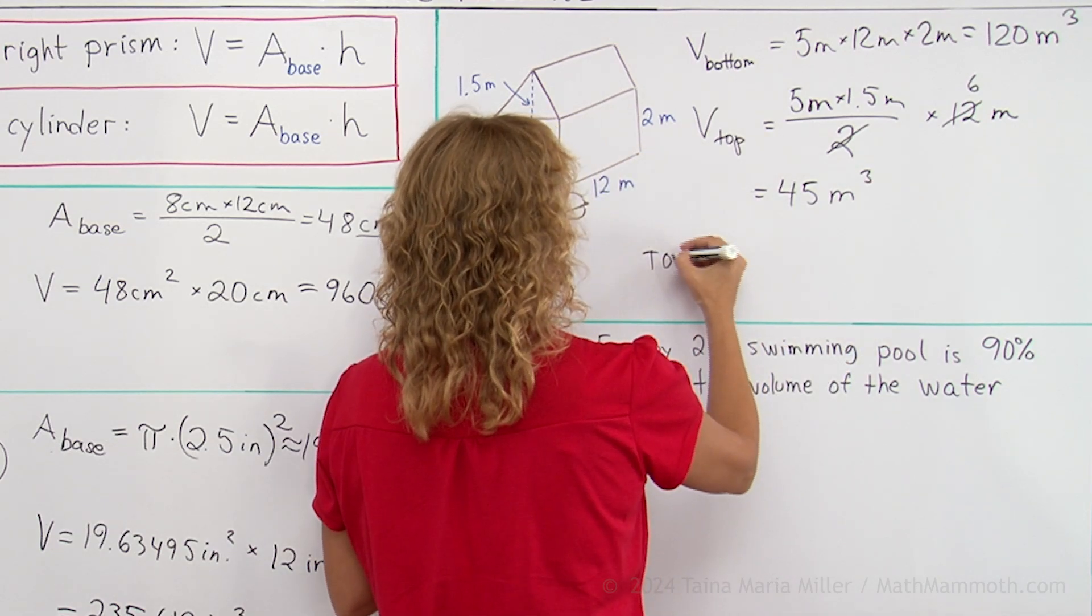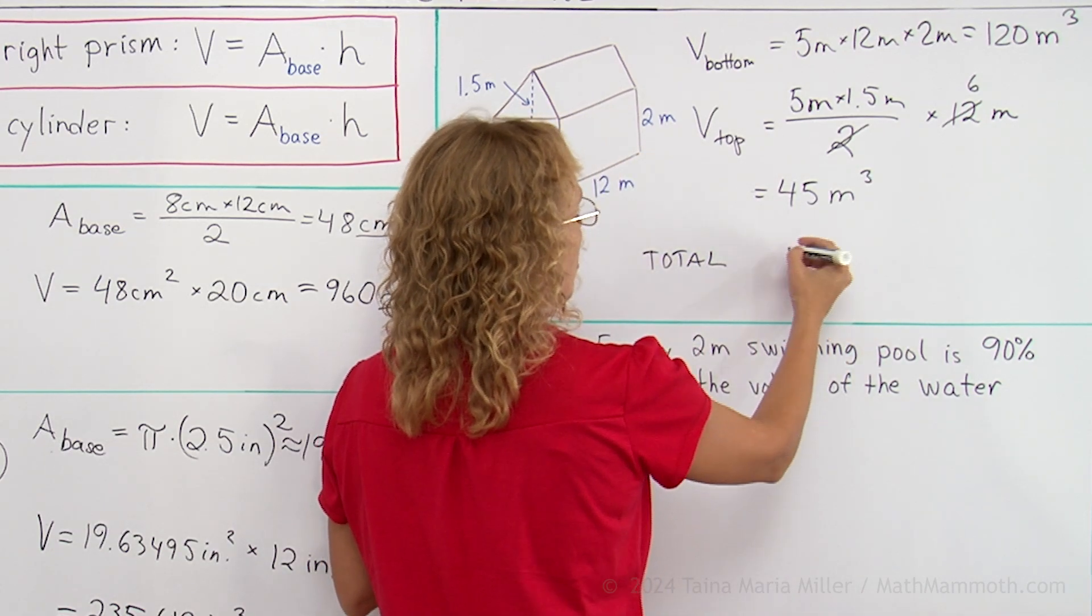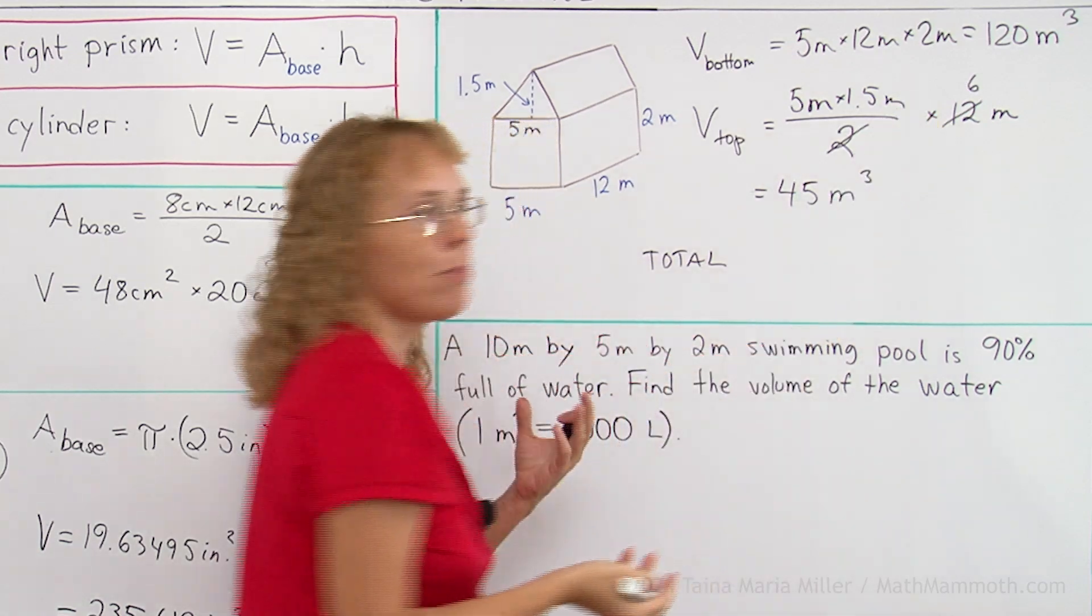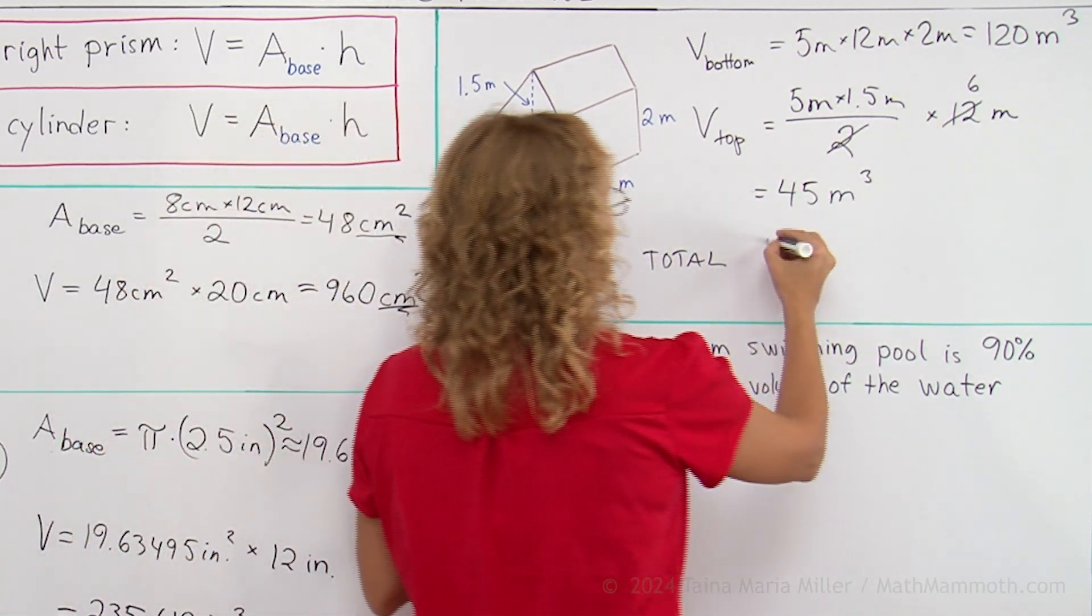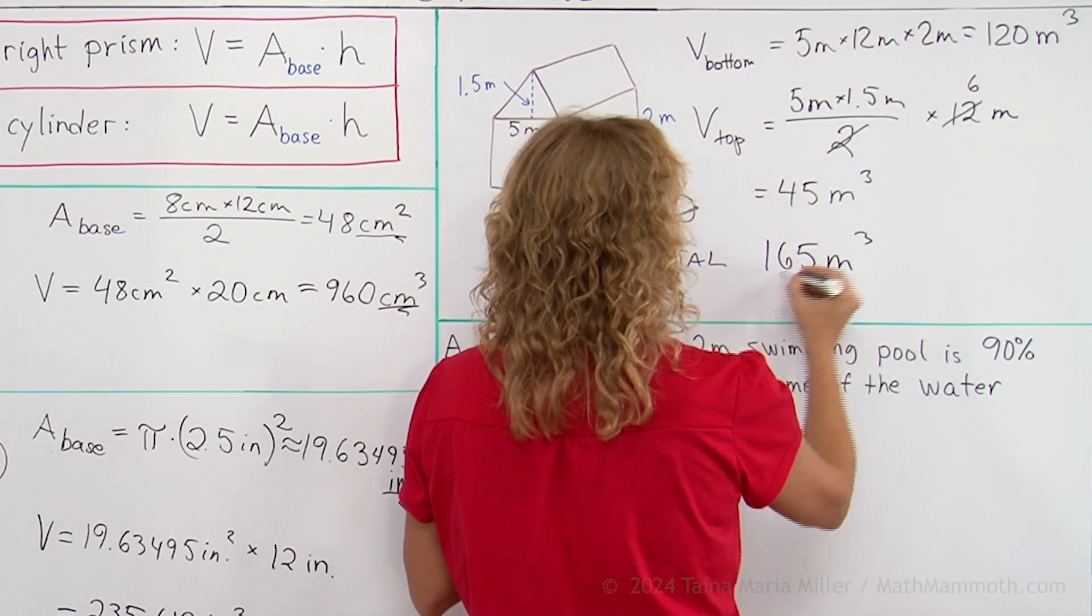And then in total, total volume would be 120 plus 45, it is 165 cubic meters.